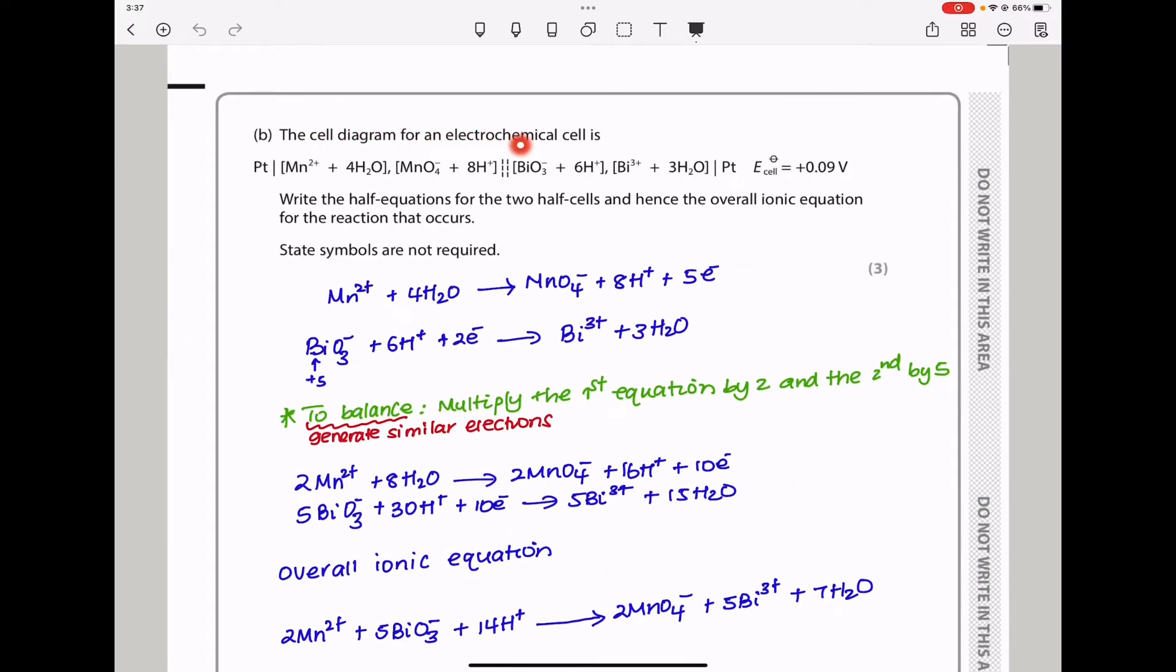The cell diagram for an electrochemical cell is shown: platinum, then manganese 2+ with water, manganese 7+ with hydrogen ions, and other components on the other side. The key thing is this represents a salt bridge, and these concentration brackets show things in the specific half cell on one side of the arrow. We can see manganese 2+ reacting with water on one side, and manganate reacting with acid on the other side. They say write the half equations for the two half cells and hence the overall ionic equation for the reaction.